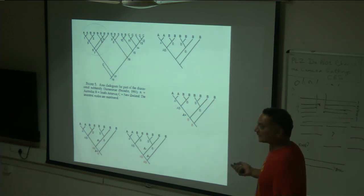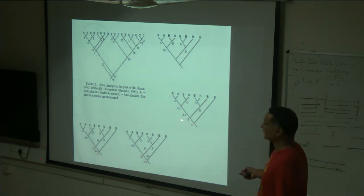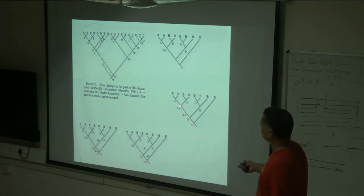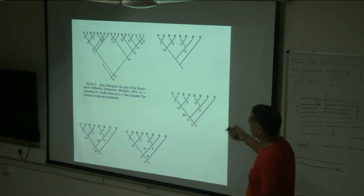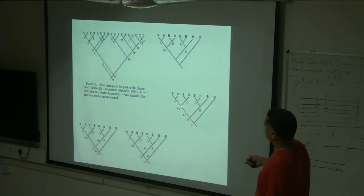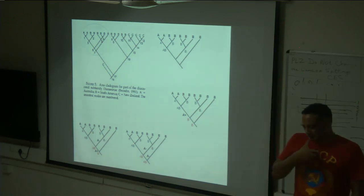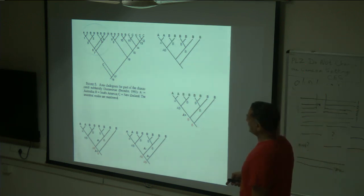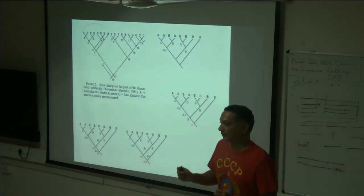This tells us that among the three areas, the center of origin of this group was area B. There was in-situ speciation in area B, and one of the lineages then dispersed to area A, followed by allopatric speciation. Within area B in that lineage, there has also been in-situ speciation. However, DIVA uses a cladogram and does not take the time component into consideration — it's similar to ancestral character reconstruction under parsimony, except that extinction and dispersal are penalized.